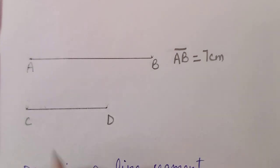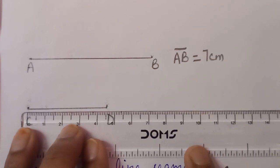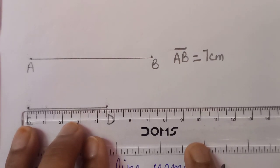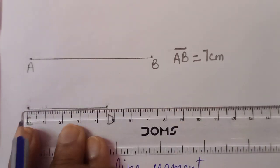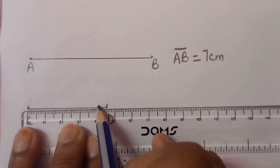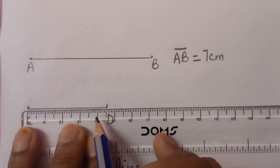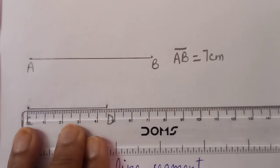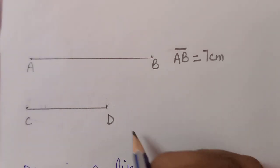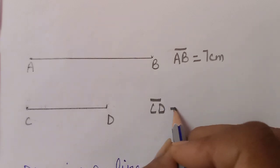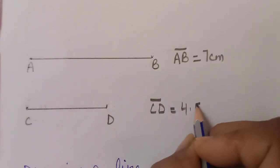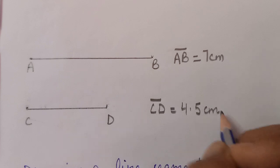This is C and D, two points. Just measure it from 0. This 0 ends up to 4. After 4, these are 1, 2, 3, 4 and 5. So this is 4.5 centimetre. So we will write it like C, D line segment is equal to 4.5 centimetre.